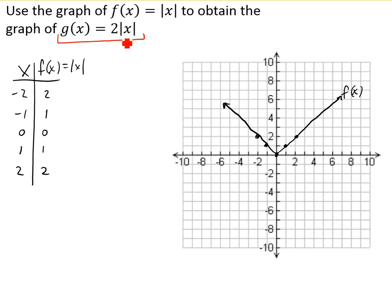So the question then becomes, what are we multiplying by 2? Are we multiplying x coordinates by 2 or y coordinates by 2? Well, this function says that we have 2 times the absolute value of x. The absolute value of x, those were our old y coordinates.